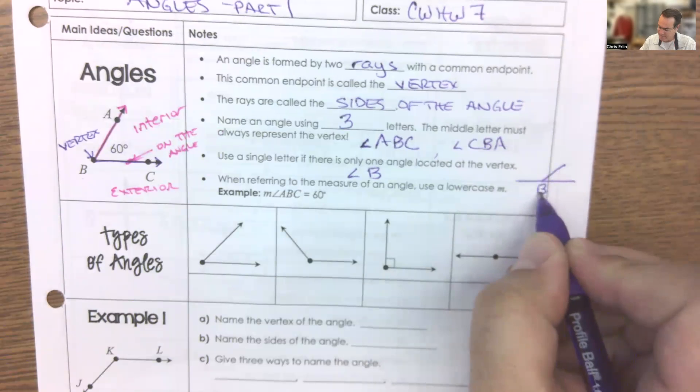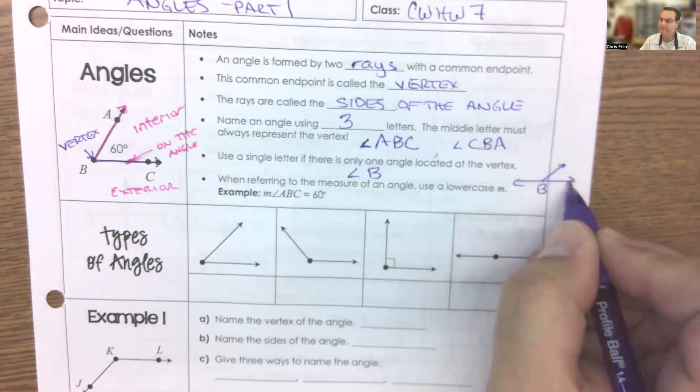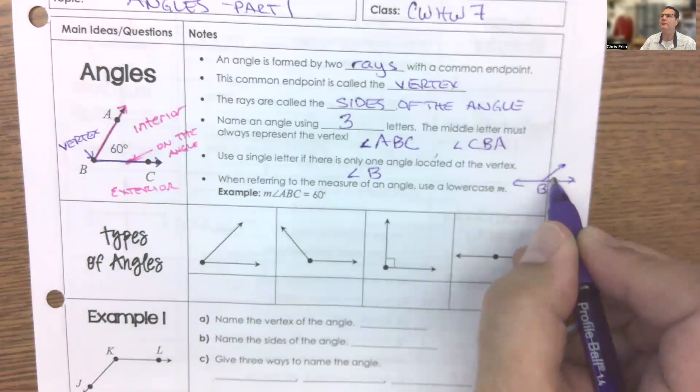If, for example, I were to look at this shape, however, this would not be an occasion when I could use angle B, because it would be unclear if I'm talking about this little angle or this bigger angle or even this whole side over here.